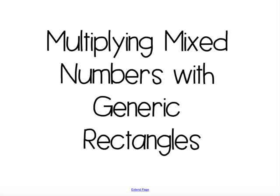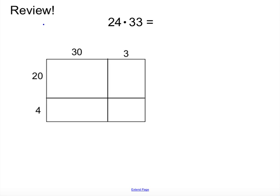Now, the first thing we're going to do is start by doing an example of a generic rectangle. So, in my example, we have 24 times 33, and I already have the generic rectangle set up for you.